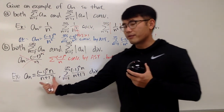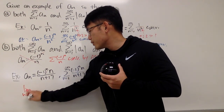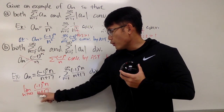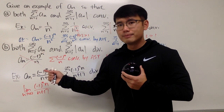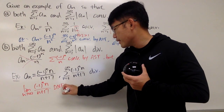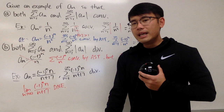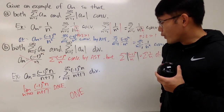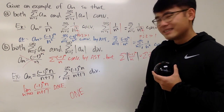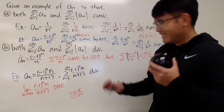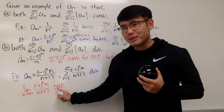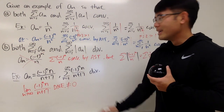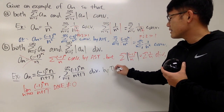Because if you look at the limit as n goes to infinity of a_n = (-1)^n · n/(n+17): notice n/(n+17) approaches 1, but the problem is we have (-1)^n, which as n goes to infinity does not exist. The limit does not exist, so it's certainly not equal to 0. Therefore this series diverges by the Test for Divergence.